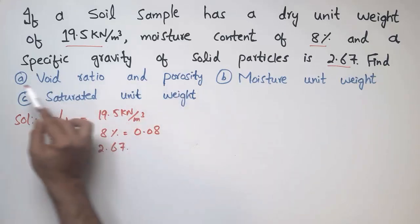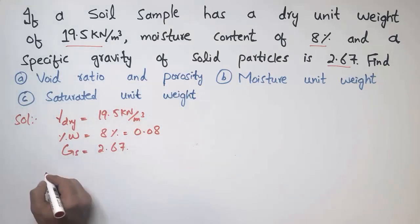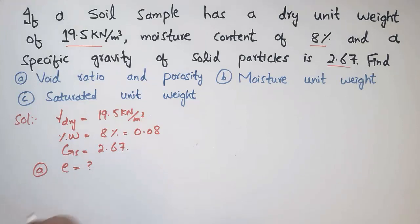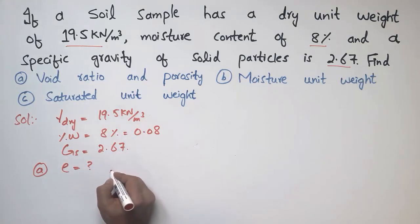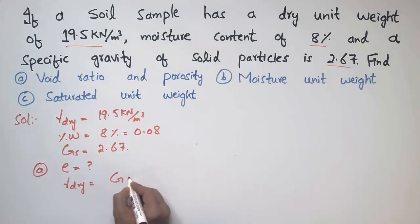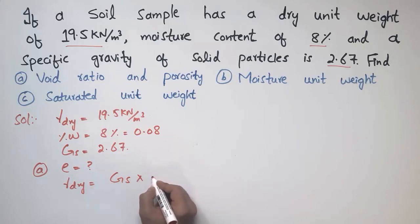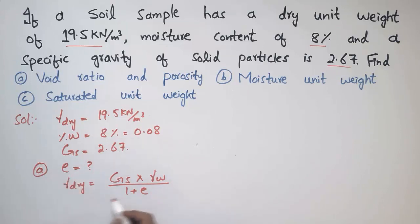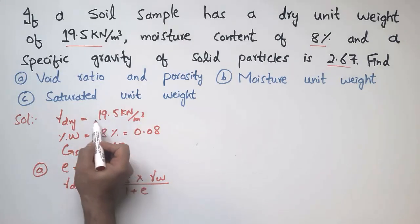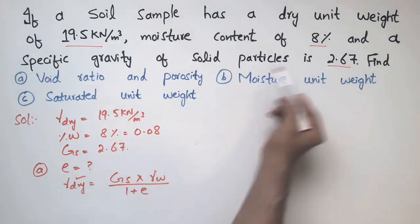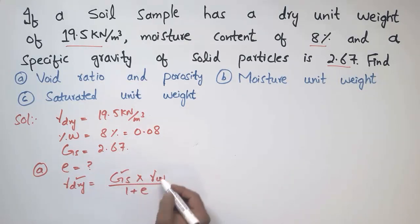The first task is to find the void ratio and porosity. Void ratio is represented by 'e' and is unknown to us. I can use the famous equation for dry unit weight: γ_dry = (G_s × γ_w) / (1 + e). Using this equation I can find the void ratio, because dry unit weight (19.5), specific gravity (2.67) are both known.